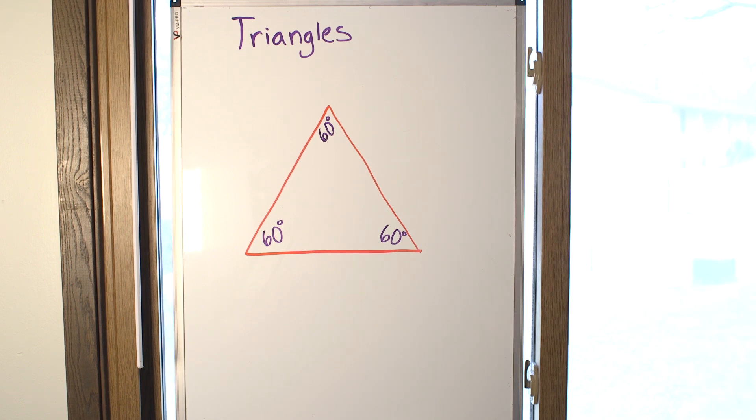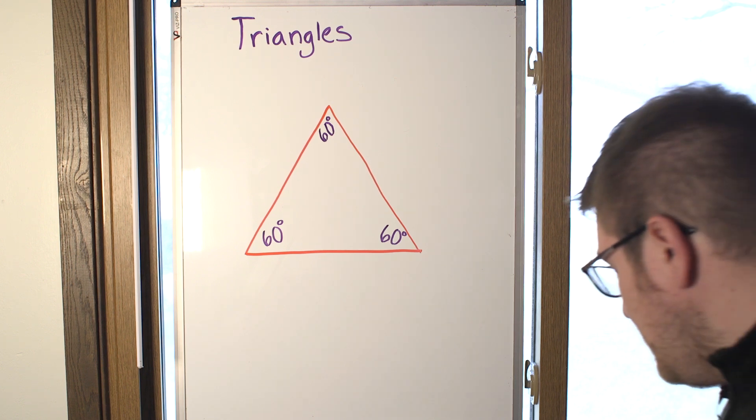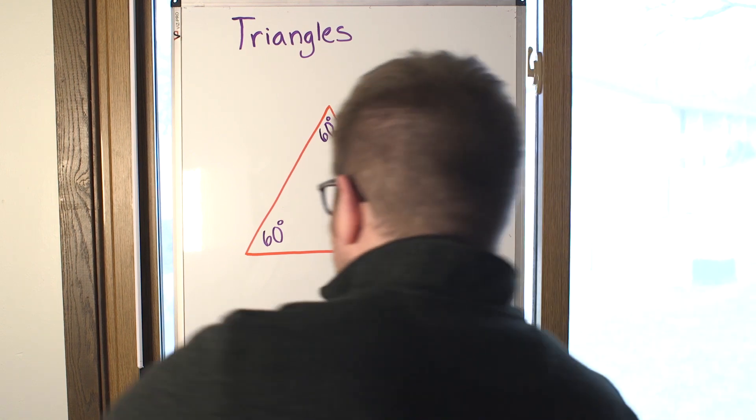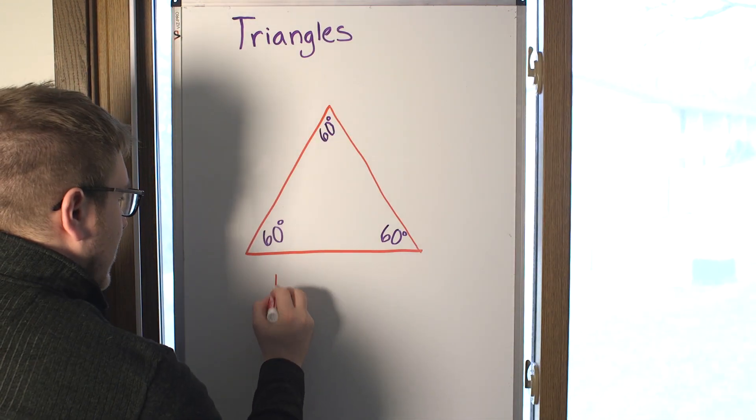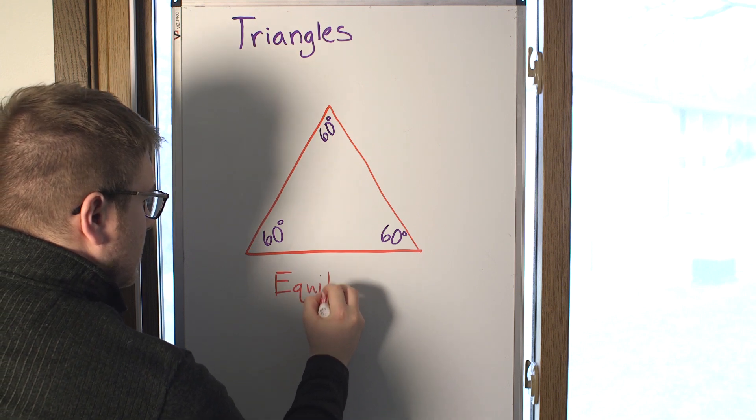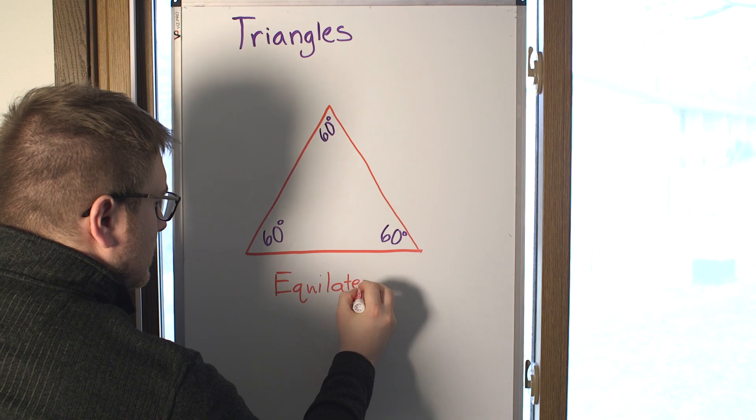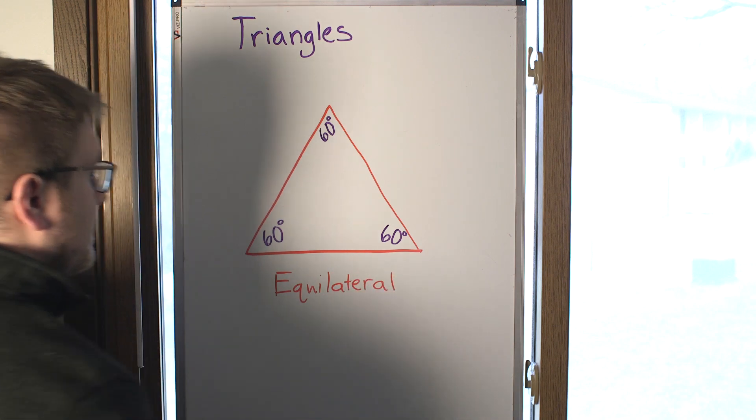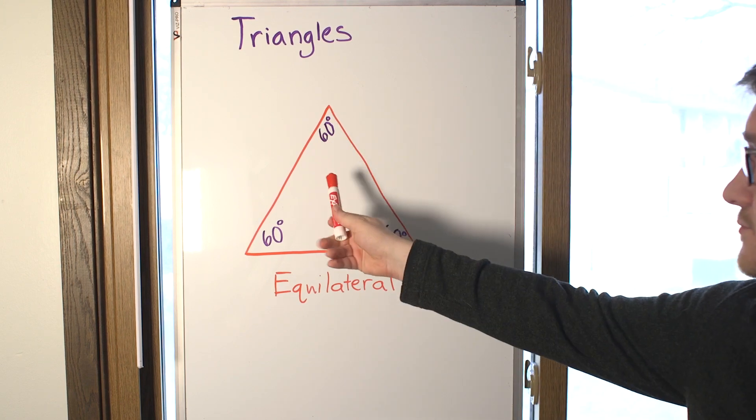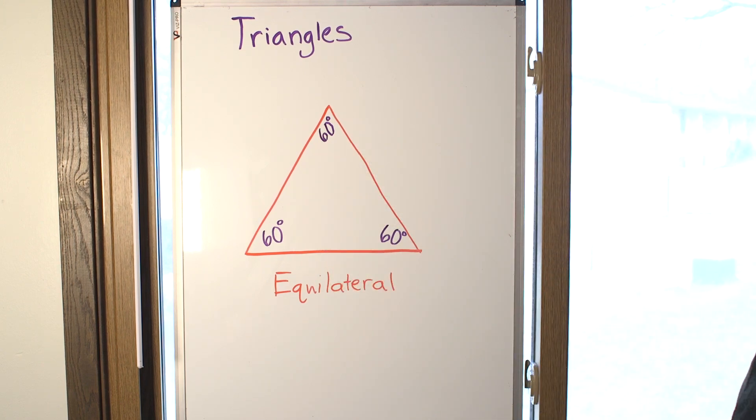Right here I have something called an equilateral triangle, and in my equilateral triangle, I have three angles, each worth 60 degrees. So, what I want you to do is to figure out the sum of these three angles.